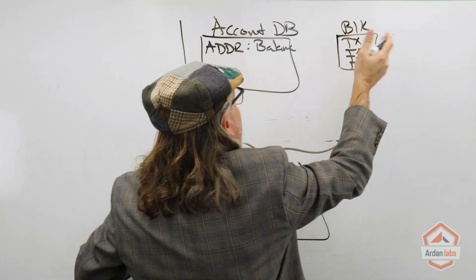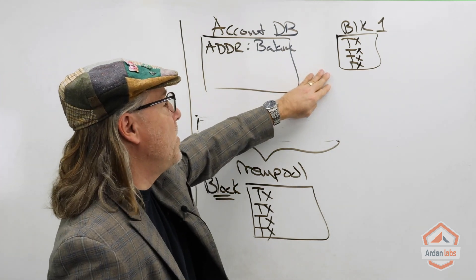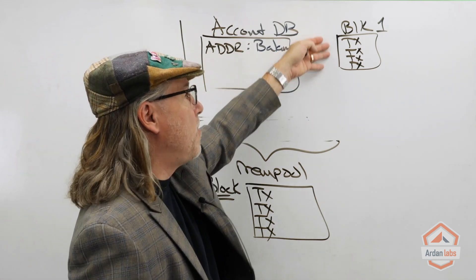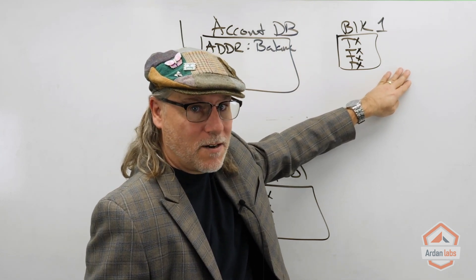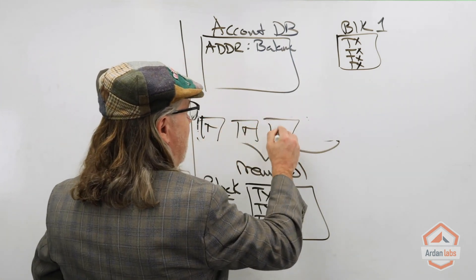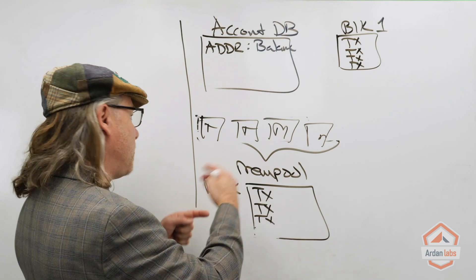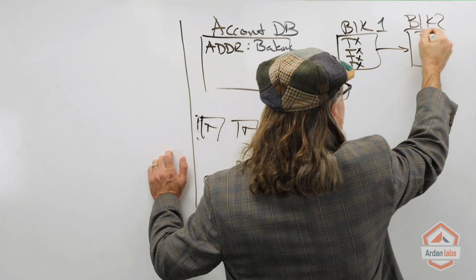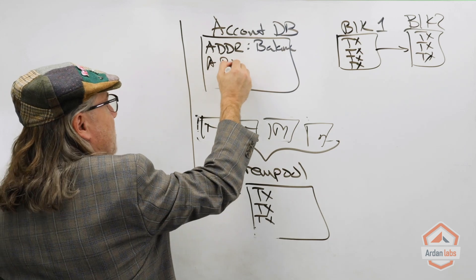After consensus and all of that, the block gets written to disk with those transactions in it. Each block has a number — so maybe that's block one written to disk. From an accounting perspective, the balance is based on all transactions in any given block that's been written — or sealed — to the chain. Then new transactions come in, consensus runs again, and we create block two.